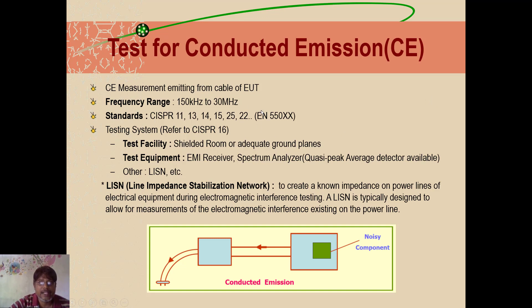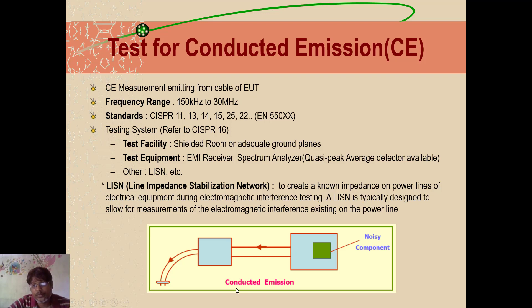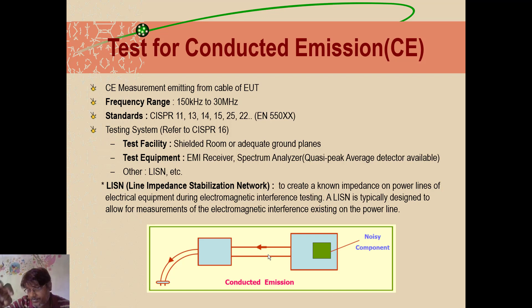Conducted emission tests measure how much is radiating while signals are transferred through conducting cables. When it is communicating through cables, how much is it radiating due to IC components — that is what this test is about. It is mostly below 30 MHz because at high frequency the signal starts radiating in space. While conducting in the cable, how much has been radiated — that is the kind of analysis we perform here.